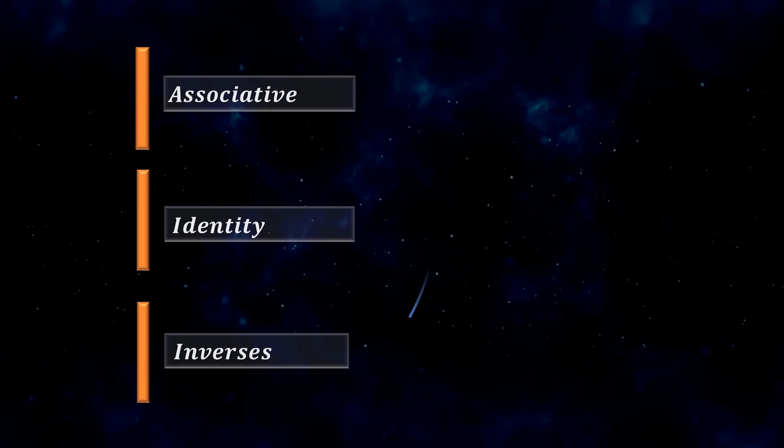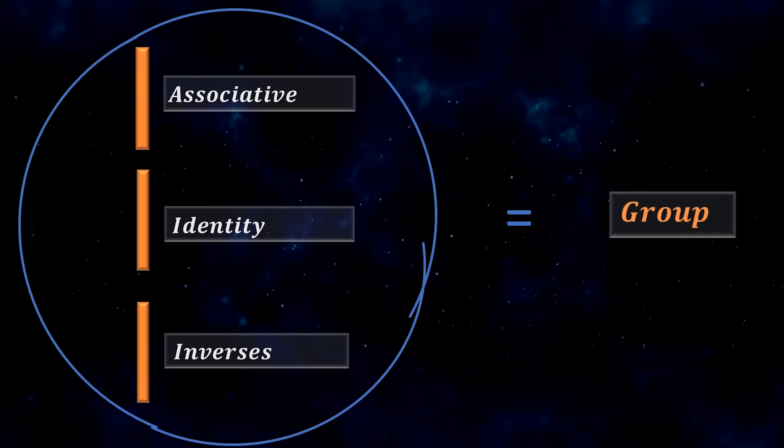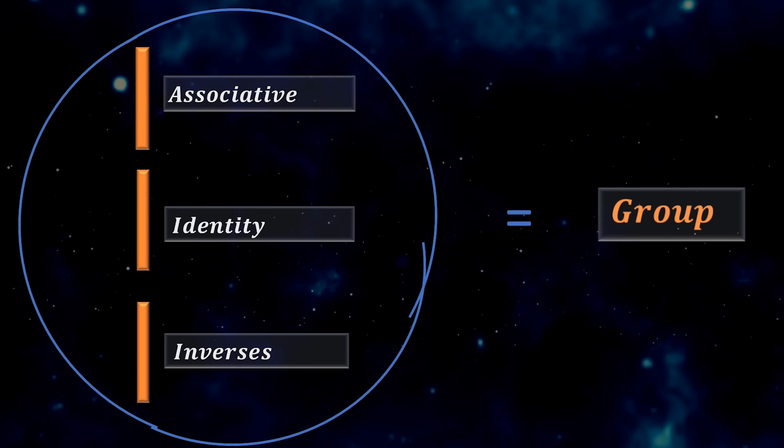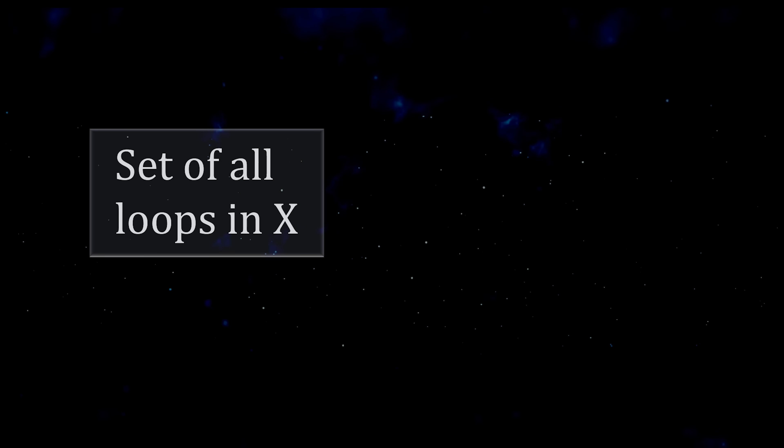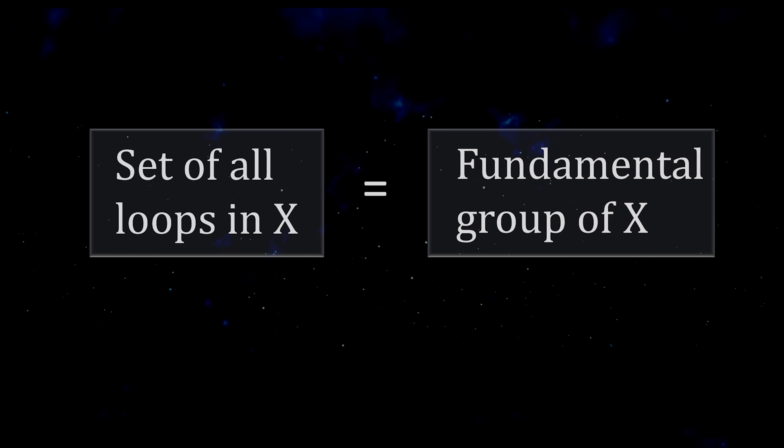Any set with an operation that has these three properties is called a group. So the set of all loops in our space x is a group. It's called the fundamental group of x, denoted π₁ of x.